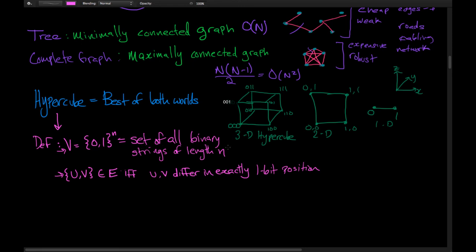This brings us to a precise definition: an N-dimensional hypercube has vertices equal to the set of all binary strings of length N. A four-dimensional hypercube would include all strings from 0000 onward. You only have an edge between two vertices U and V if they differ in exactly one bit position. For example, in the 1D case, 0 and 1 differ in exactly one bit. In the 2D case, 00 is connected to 01 and 10 but not 11, because getting from 00 to 11 requires flipping two bits.